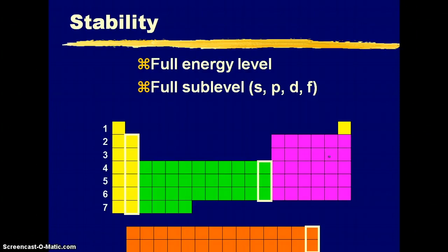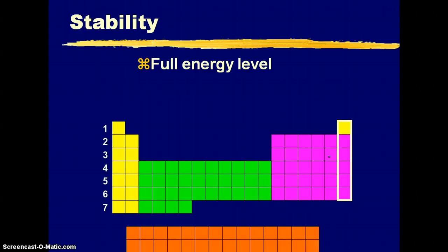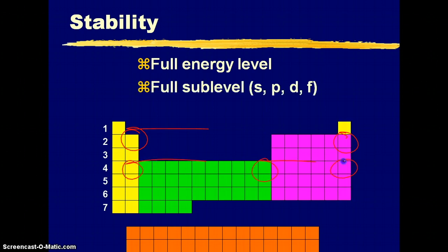The next most stable is going to be your completely full energy levels, even though maybe the entire energy level is not filled. So a full S, a full P, a full D, a full F. Now, what's special about this last row, this full energy level, is you have a full S and a full P. Or, in this case down here, a full S, a full D, and a full P. So that becomes very important.